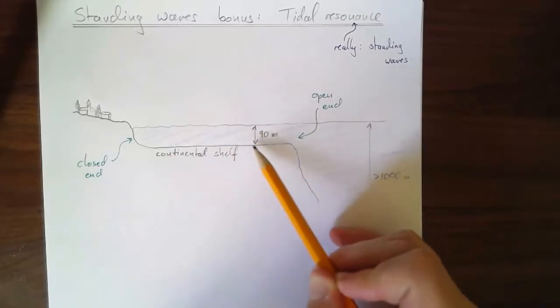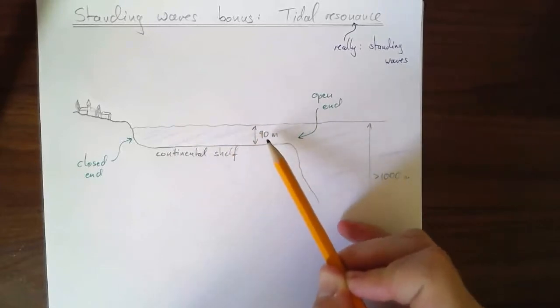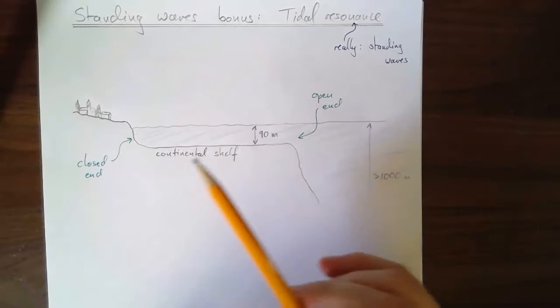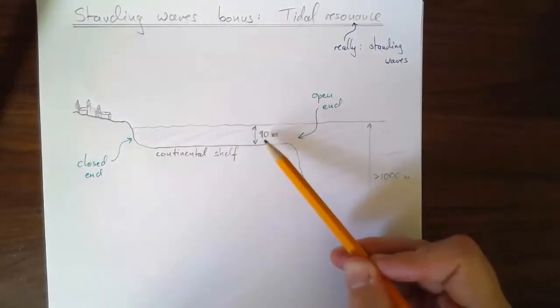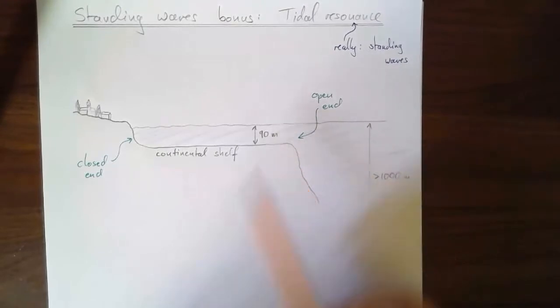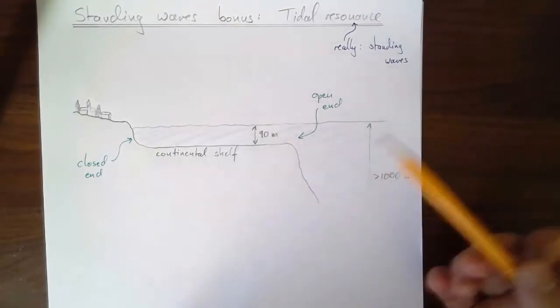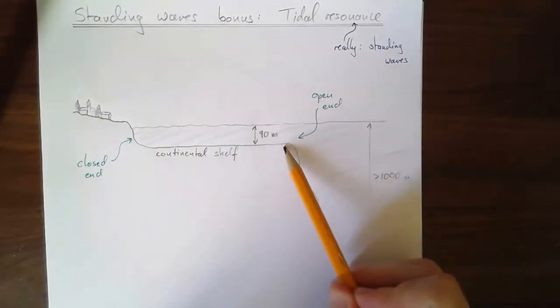I'm going to pick my continental shelf to have a depth of about 90 meters. Of course, realistically, it varies a bit depending on where you are, but it's a good enough estimate. Then at some point, there comes this drop-off, the edge of the continental shelf.